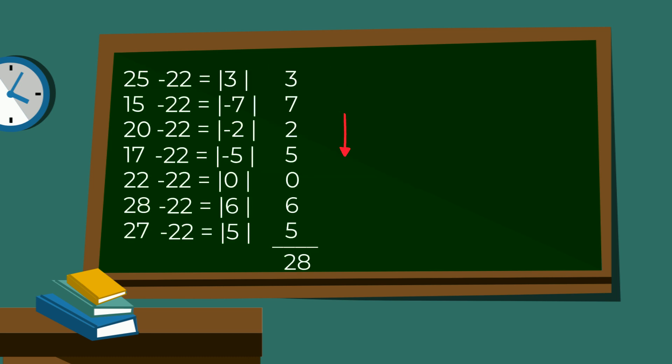When you total the difference, it equals 28, and divide this by the number of elements in the data set, and you get a MAD of 4.